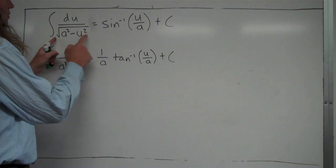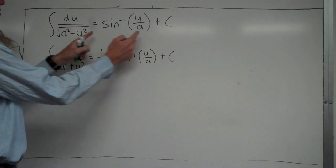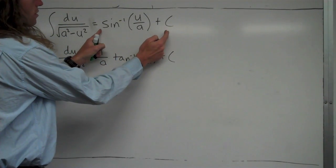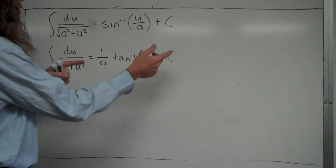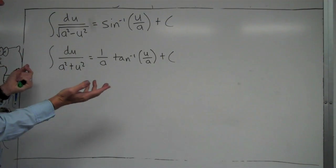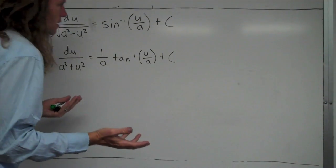If this is the anti-derivative, that means if you take the derivative of this inverse sine using the formula for derivatives and simplify it, this is what you would get. That's how they made this connection.